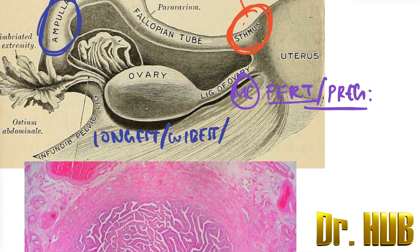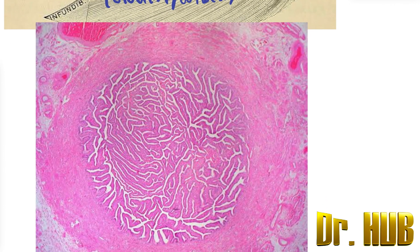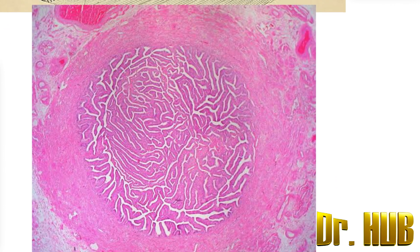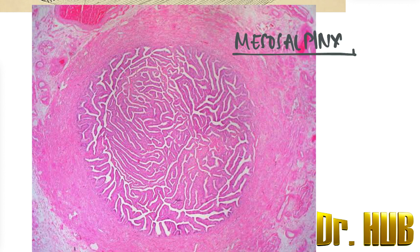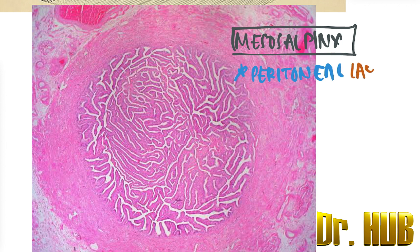Now let's look at the histology. The ampulla, isthmus, and infundibulum are extra-uterine and they have three layers. The outermost layer is the mesosalpinx, which is a peritoneal layer, also known as the serosalpinx.